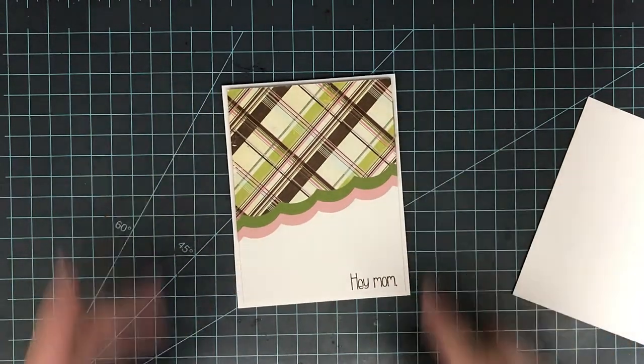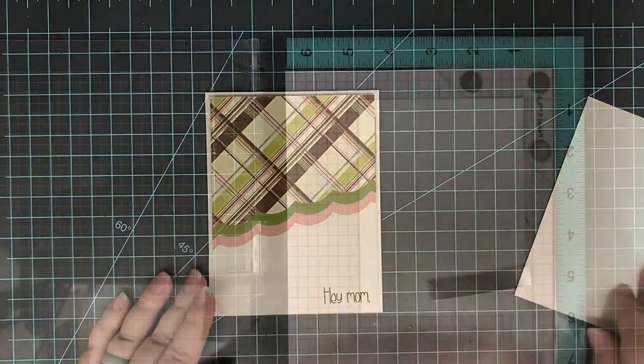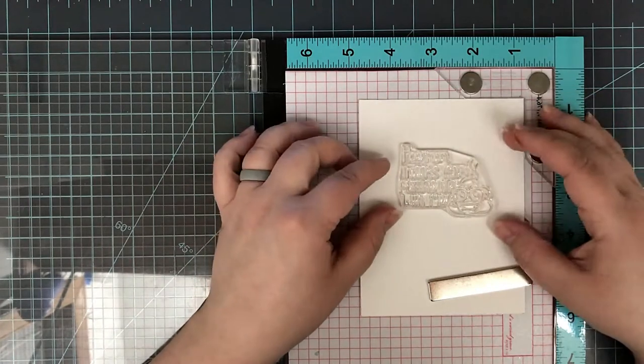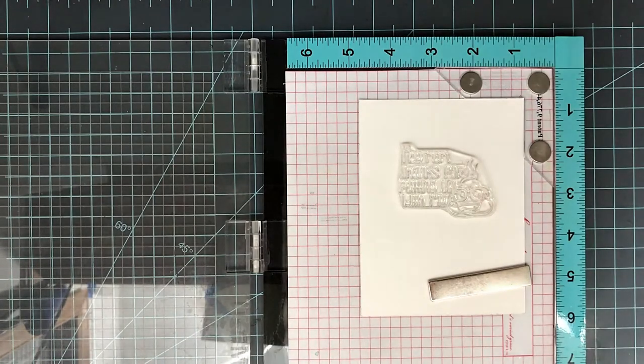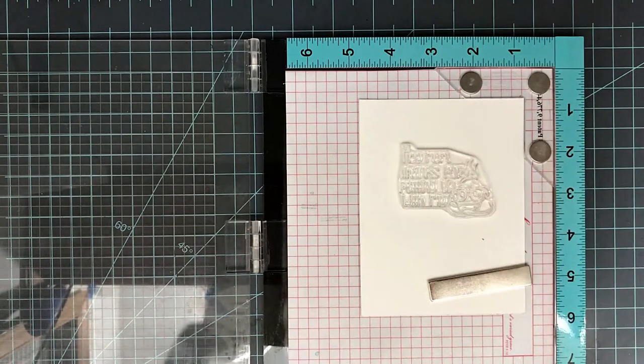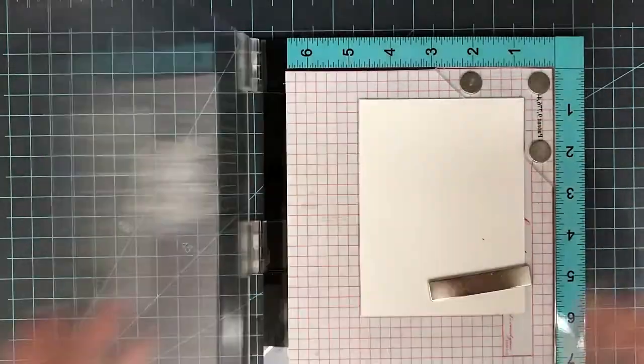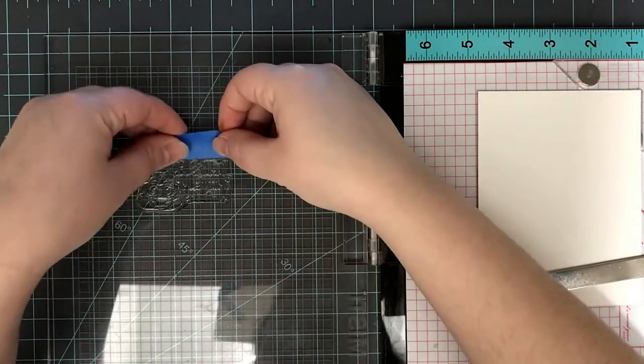Now I'm going to be using alcohol markers to color on the inside of the card. That's why I did grab an extra panel. If you don't mind the color on the back, normally I don't, but because this is a Mother's Day card I wanted to go that extra step. So I went ahead and cut another panel. This one is the same size as the front, and it's actually the one that I misstamped on. I didn't want to waste a whole panel of cardstock, so I'm just going to stamp on this and color.